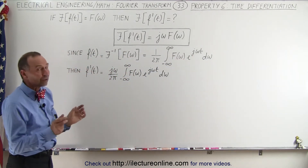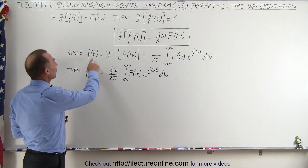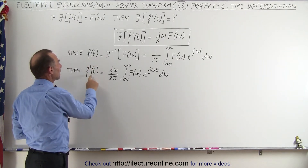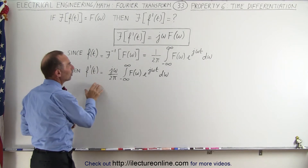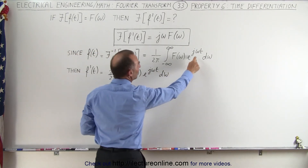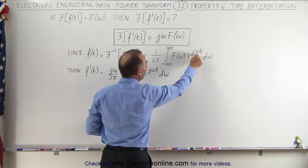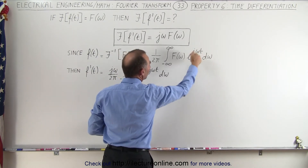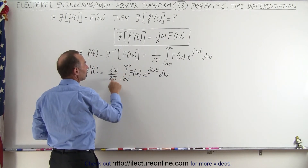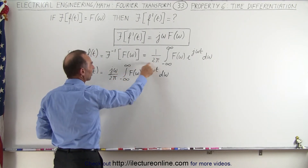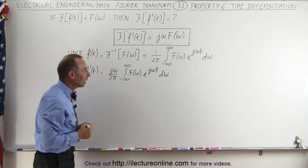Now, what we're going to do is take the derivative of both sides. We take the derivative with respect to time of f of t, giving us f prime of t. On the right side, j and omega in the exponent are just constants, so when we take the derivative, j omega comes outside the integral sign, and we still have the 2 pi in the denominator.